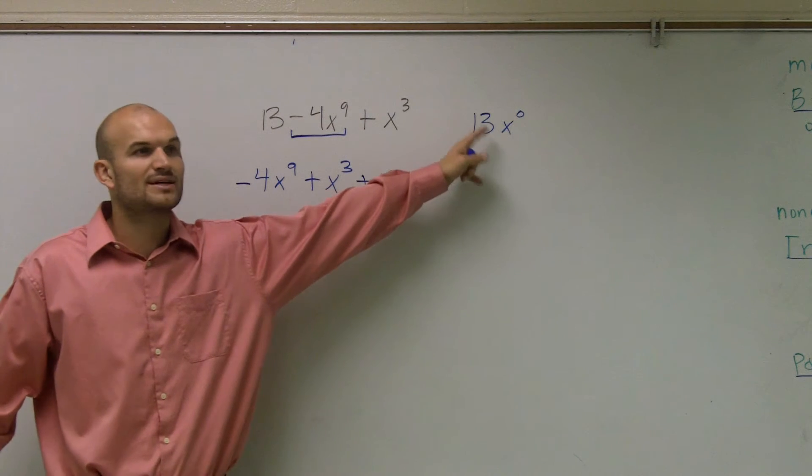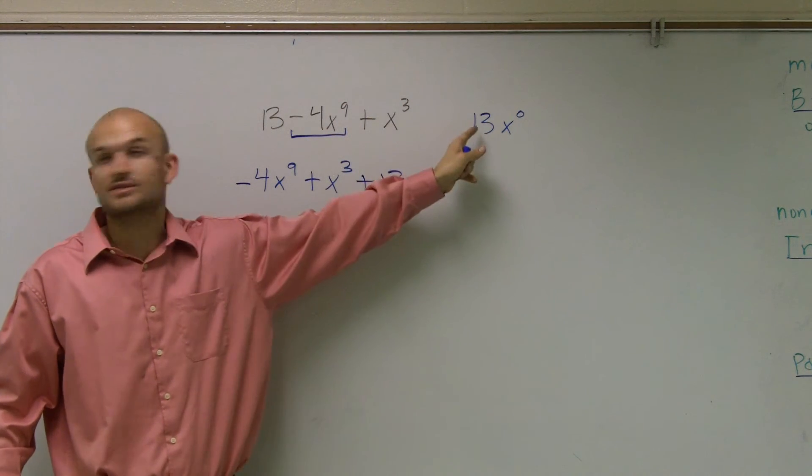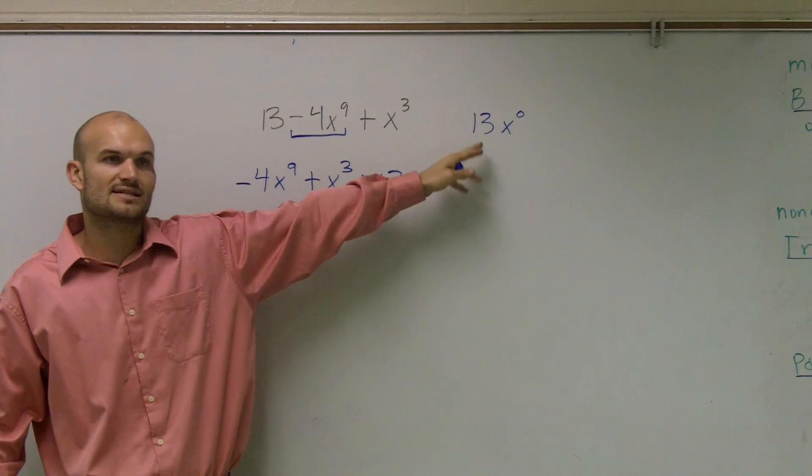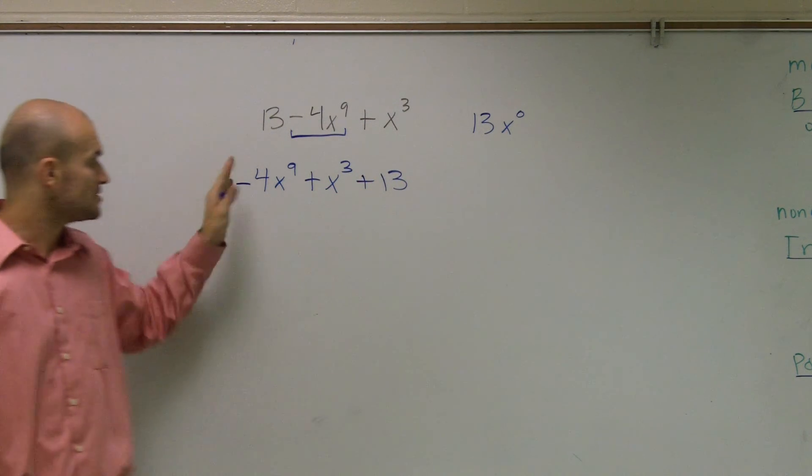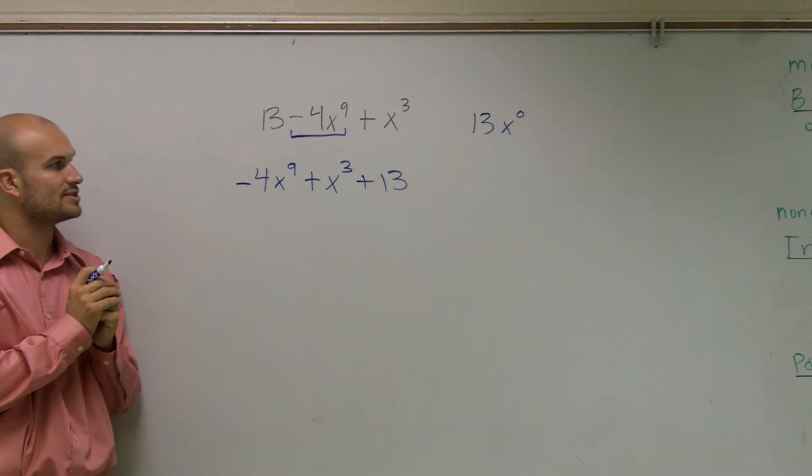Why is it to the 0 power? Because any number raised to the 0 power is 1, and 1 times 13 is 13. Just remember, numbers are always last. So we have negative 4x to the 9th plus x cubed plus 13.